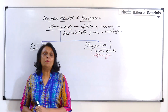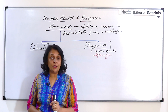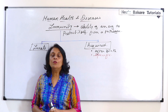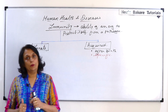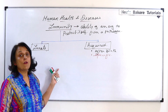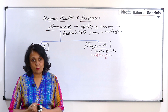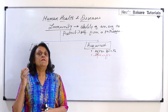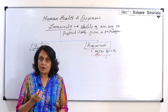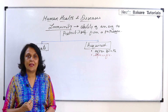In the previous video we talked about innate immunity — that is the immunity that we have from birth — and we talked about four different ways in which we have this innate immunity: physical barrier, physiological barrier, cellular barriers, and cytokine barriers.